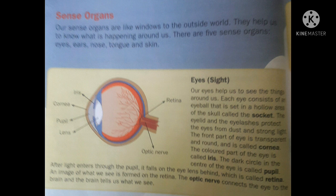Eyes — in bracket it is written 'sight.' They help us in seeing; they help us to get sight of different things. Our eyes help us to see the things around us. We are able to see because of our eyes. If we close our eyes, then we are not able to see anything. Each eye consists of an eyeball that is set in a hollow area of the skull.